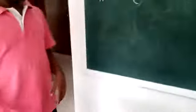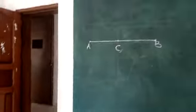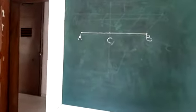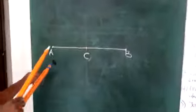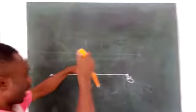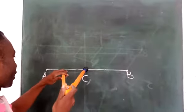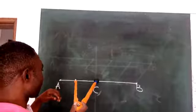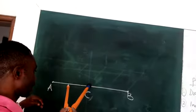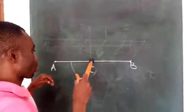I want to erect the perpendicular line from point C. To do that, I'm going to use point C as my center. Using point C as my center and any convenient radius, I will now draw my arc.